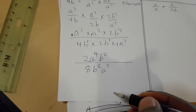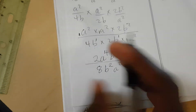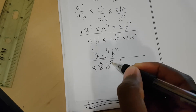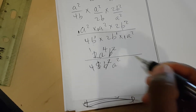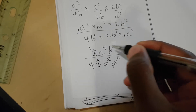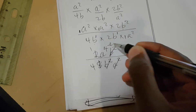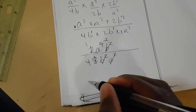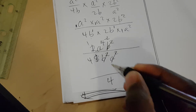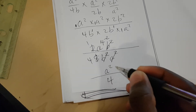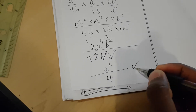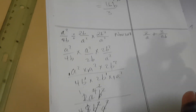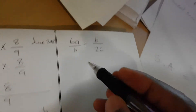Now reduce: 2 into 2 is 1, 2 into 8 is 4. Then B² and B² cancel each other. For a⁴ divided by a², subtract exponents: 4 − 2 = 2, so you remain with a². The final answer is a² over 4.